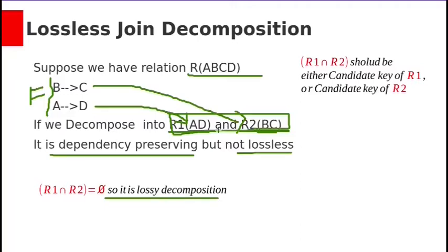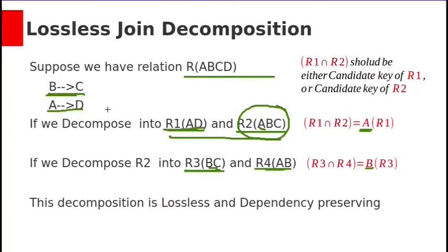So you will get spurious tuples, means there will be additional rows which are not valid. And also here, A determines B holds on this relation, B determines C holds on relation R3.